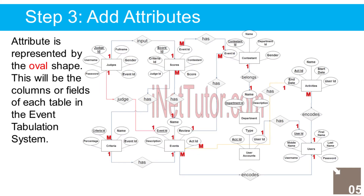The last part of the ERD process is to add attributes to our entities. Users entity has the following attributes: 1. UserID — primary key (represented with underline), 2. First Name, 3. Middle Name, 4. Last Name, 5. Username, 6. Password. User Account entity has the following attributes: 1. Account ID — primary key, 2. UserID — foreign key, 3. Type.